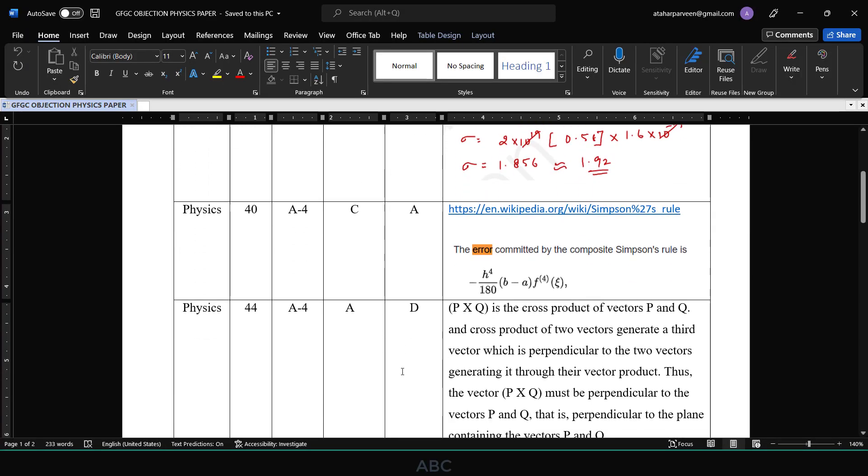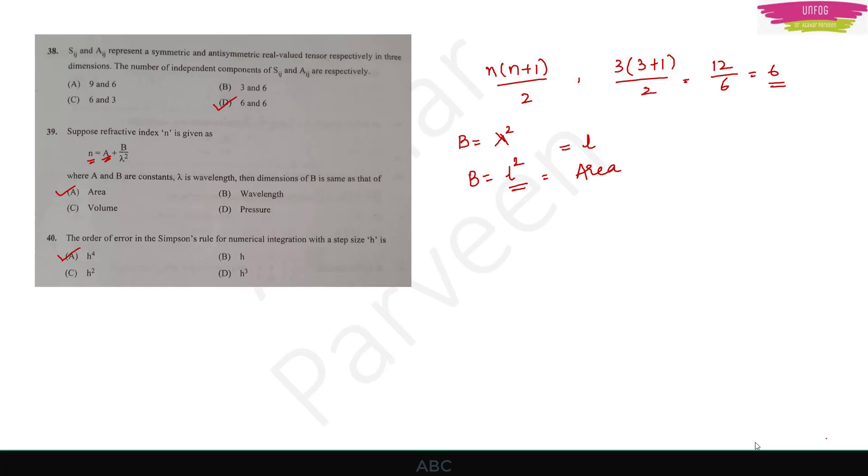Next is question number 40 where they are asking for the order of error in Simpson's rule for numerical integration with the step size h. I found that it is h raised to 4, even in Wikipedia it is given the same. I have written the same in the objection list and given the link of Wikipedia there.